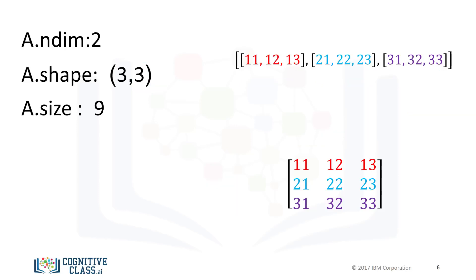We can also use the attribute size to get the size of the array. We see there are 3 rows and 3 columns. Multiplying the number of columns and rows together, we get the total number of elements — in this case 9. Check out the labs for arrays of different shapes and other attributes.